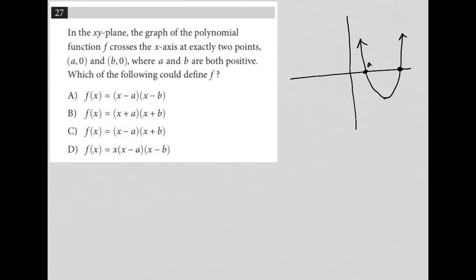And let's just call this one point a, so that would be a,0. And this is going to be point b, so that would be b,0.